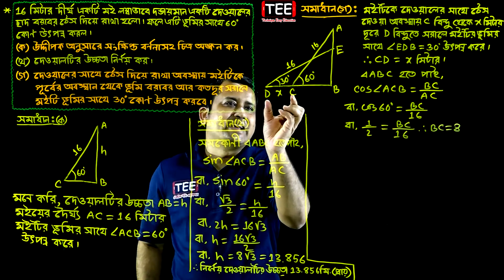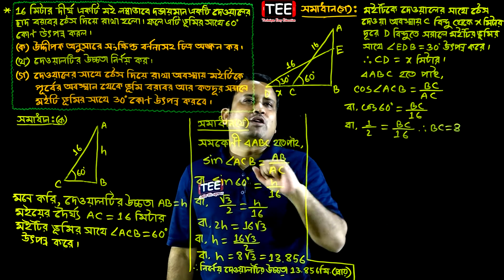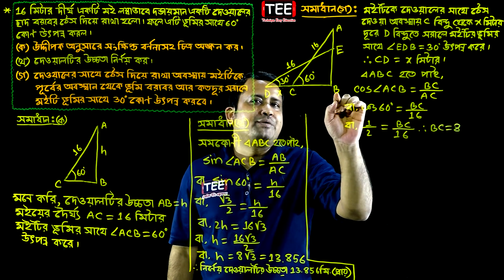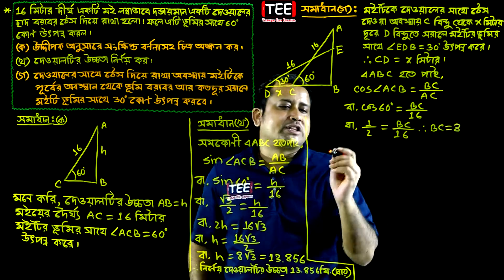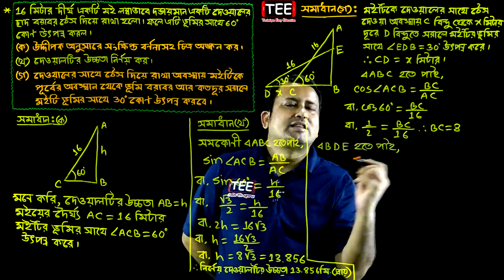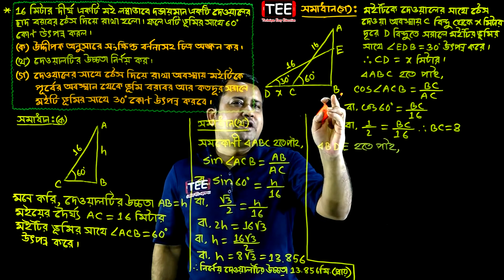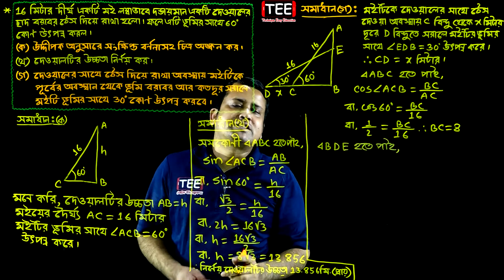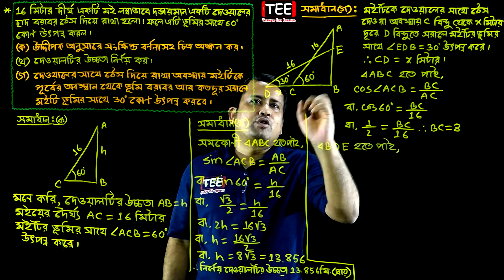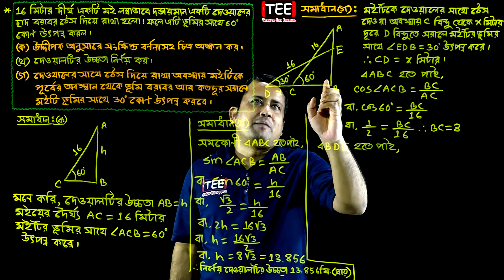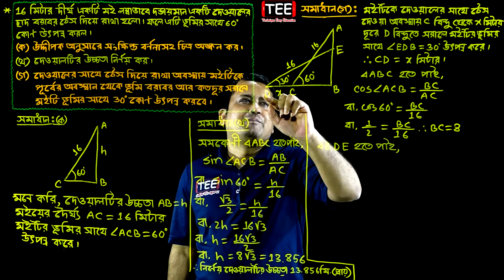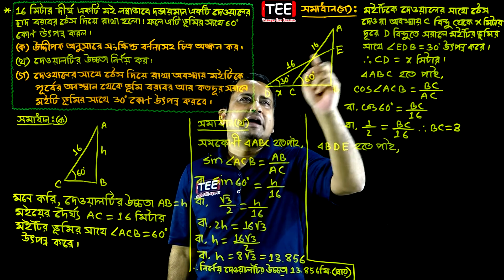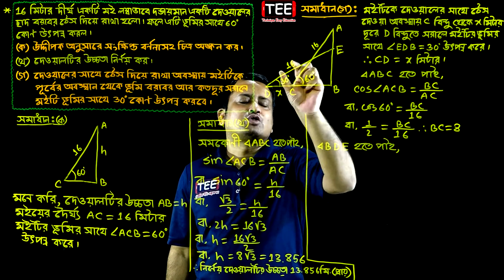So our CD is equal to BC divided by 16. So CD is equal to B, D, E. So B, D, E is equal to B, D, E. D, E is equal to 6.